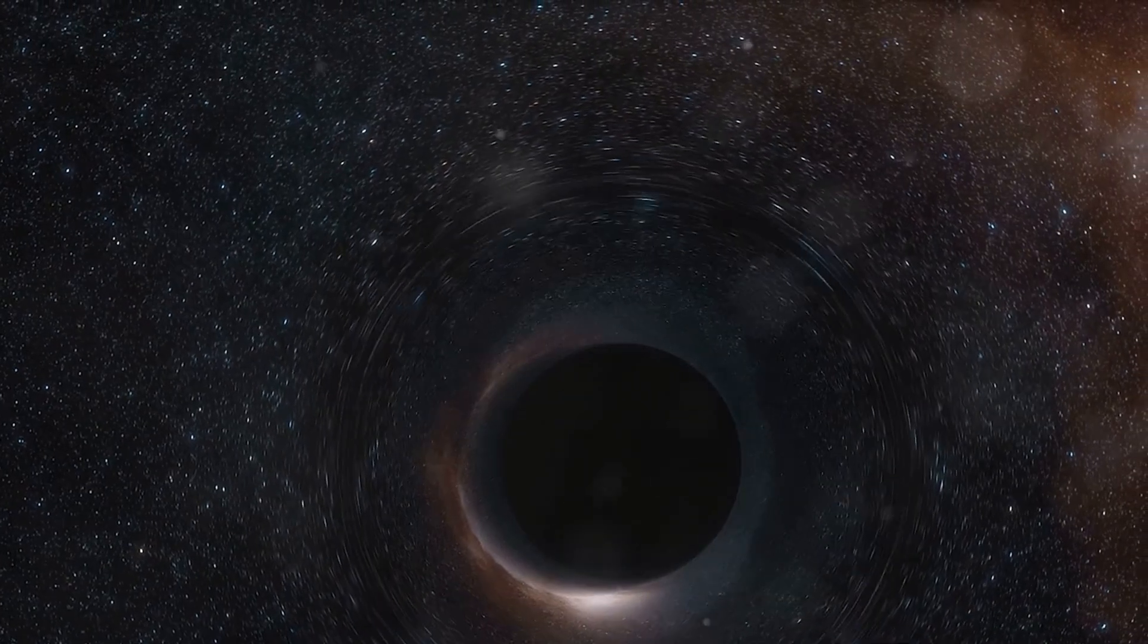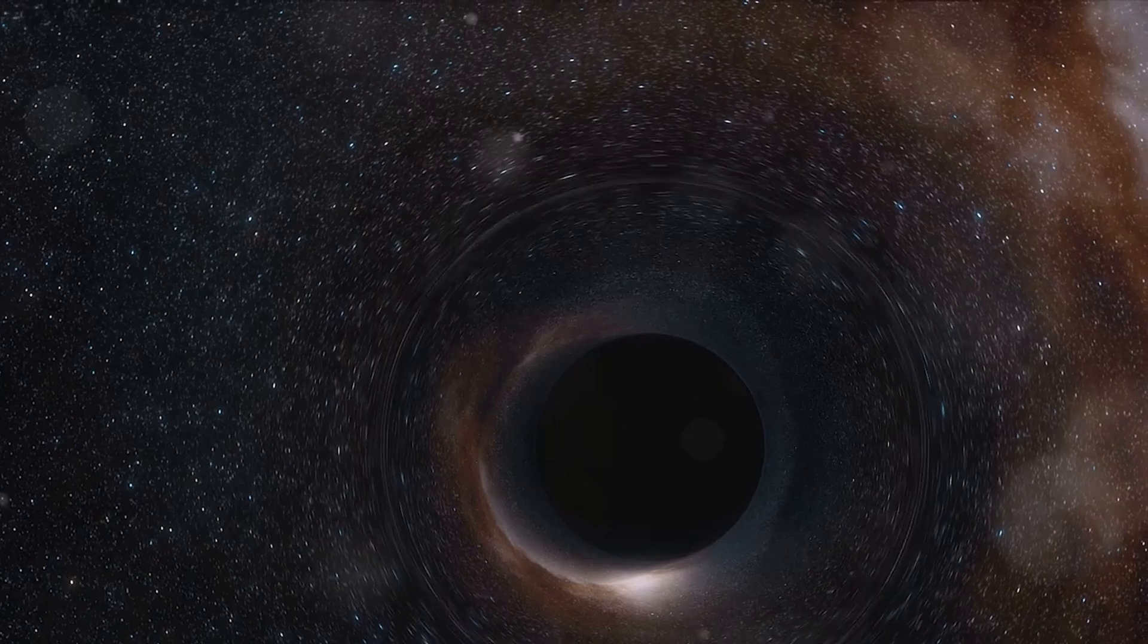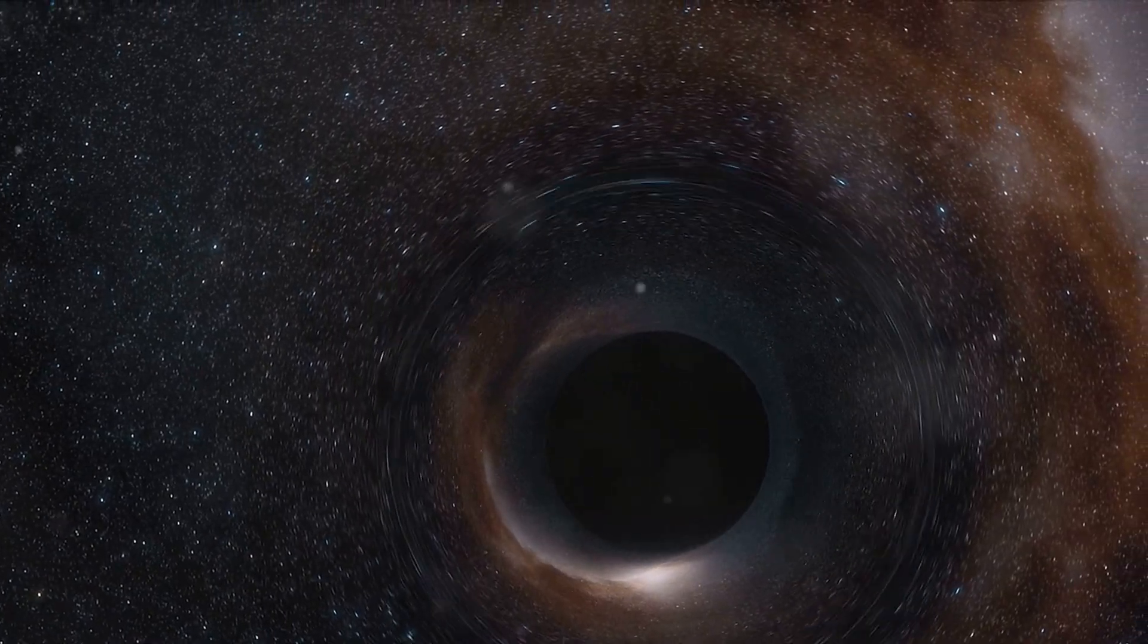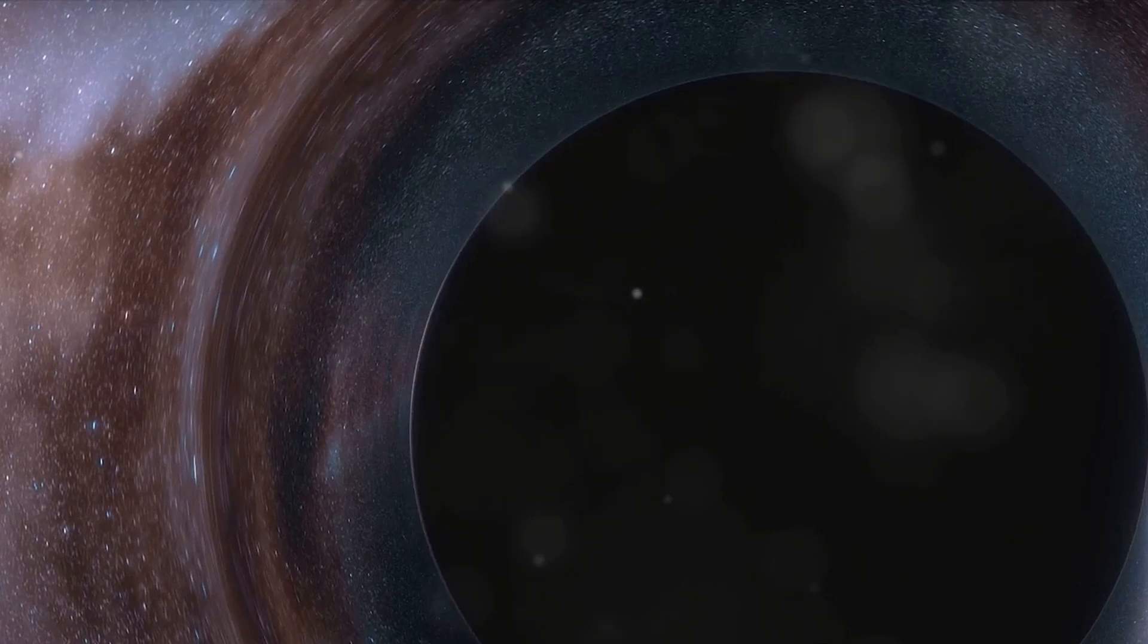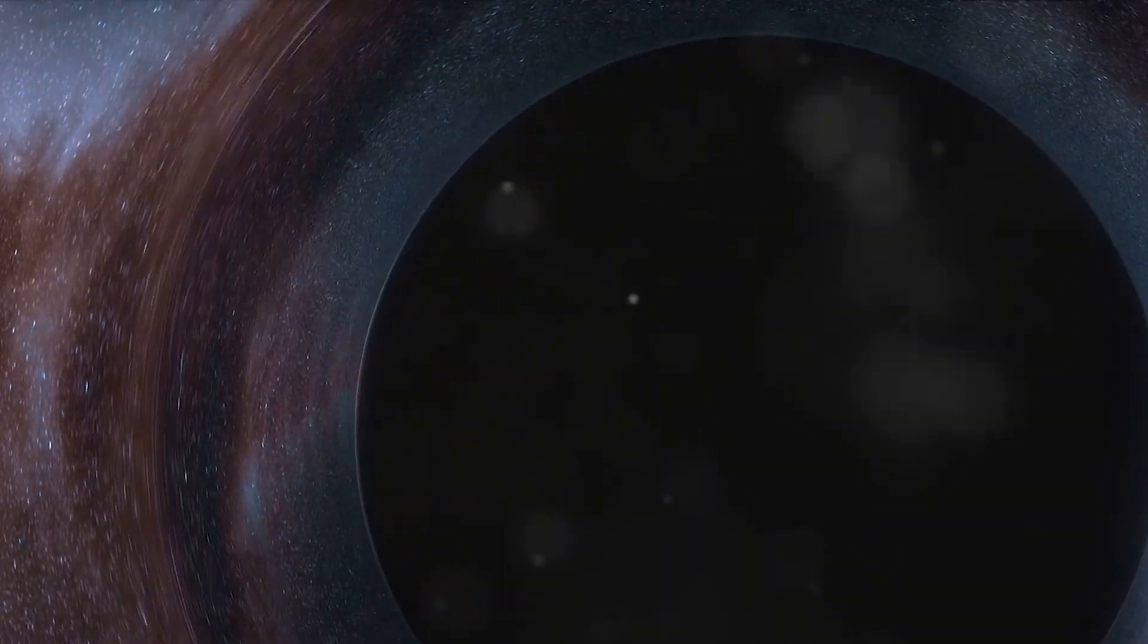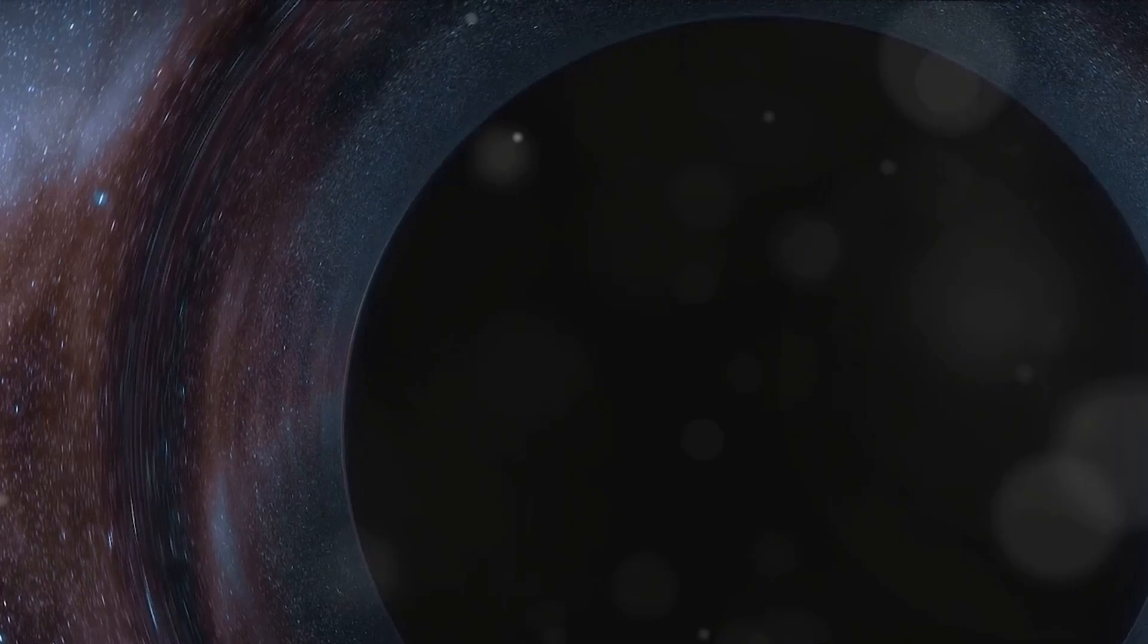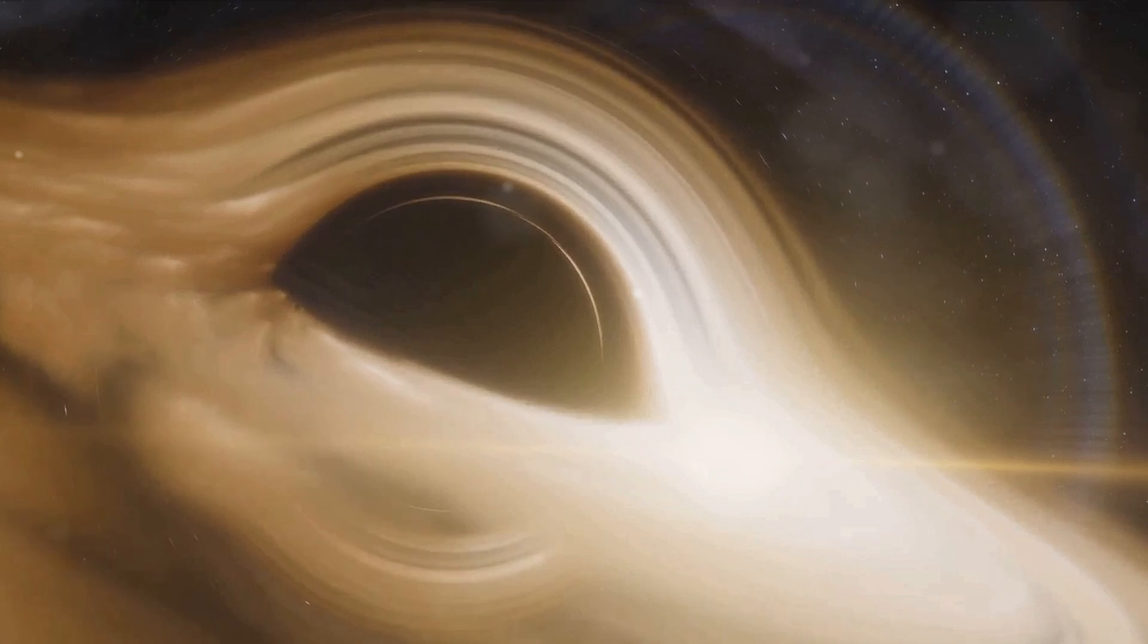The first thing you'd encounter on your journey into a black hole is a threshold known as the event horizon. It's a boundary in space-time beyond which events cannot affect an outside observer. In simpler terms, it's the point of no return. Once you cross the event horizon, there's no turning back, no matter how powerful your spaceship's engines are. But what happens inside the black hole?